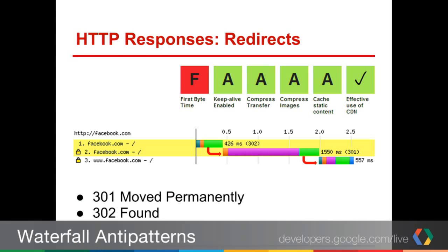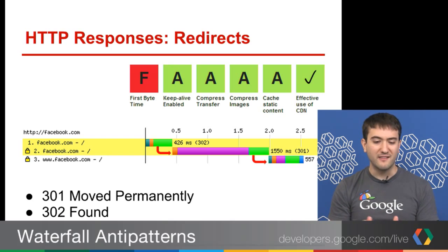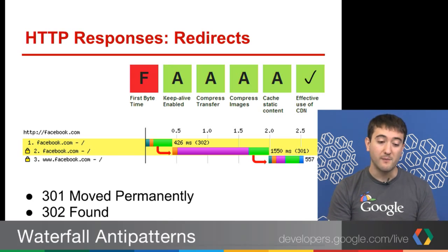For every request, there is a response. Sometimes those responses say that what you wanted was not actually in the location at which you requested it. In this example, we're loading Facebook.com over HTTP, and Facebook.com has a 302 redirect — 302 is "Found," basically saying it moved temporarily. After Facebook.com redirects to HTTPS Facebook.com, it does another TCP connection, SSL negotiation, and then there's some time to first byte backend processing time. After one and a half seconds, it does a 301 moved permanently redirect to HTTPS www.facebook.com.